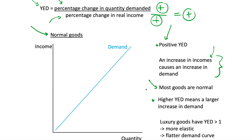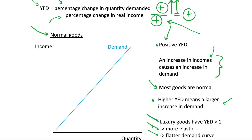We also note that a higher income elasticity of demand means a larger increase in demand for any given change in real income. If we increase our percentage change in quantity demanded as a result of a change in income, we get a larger YED. So a high YED means any change in real income gives a very big increase in demand. As a consequence, luxury goods will have a YED greater than one because they are more elastic, and as with elastic price elasticity, this gives us a flatter demand curve.